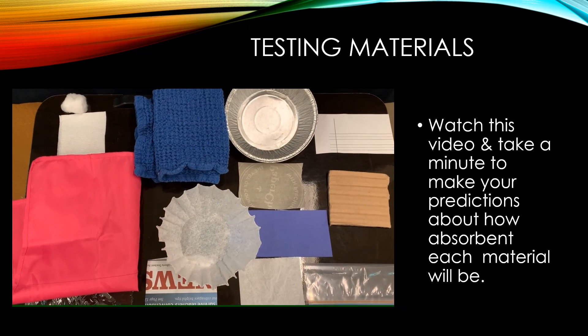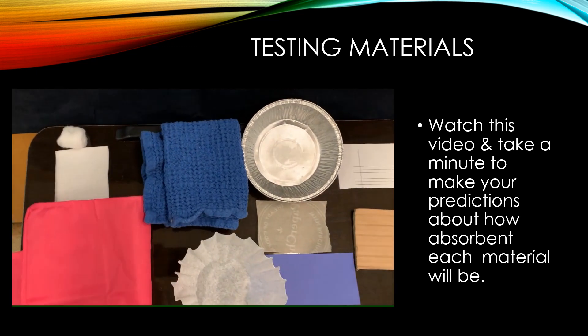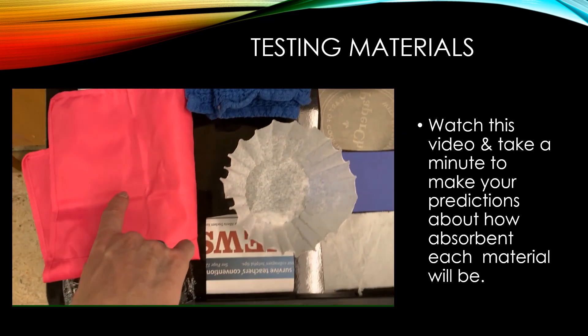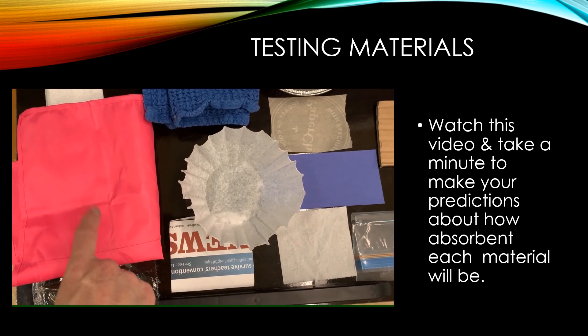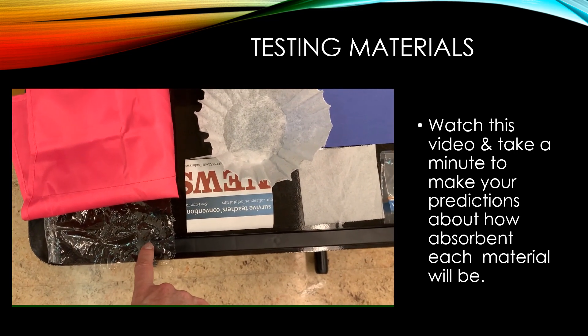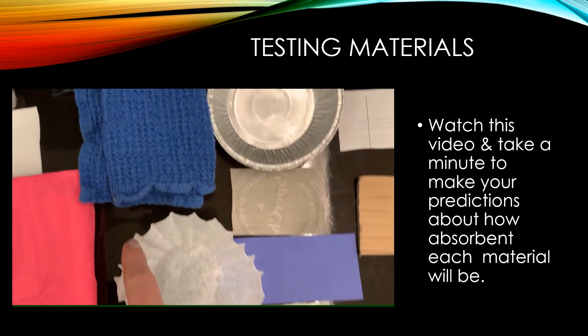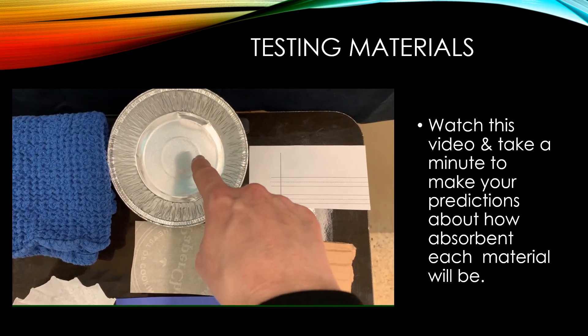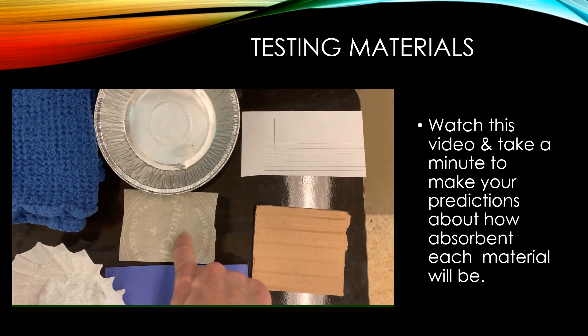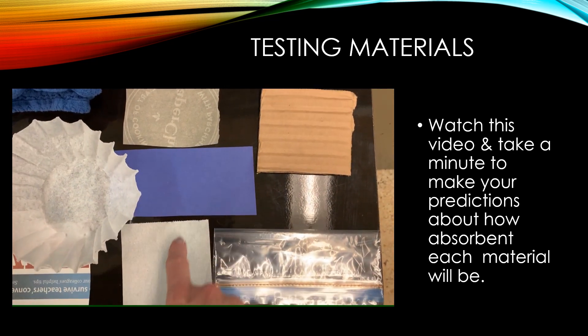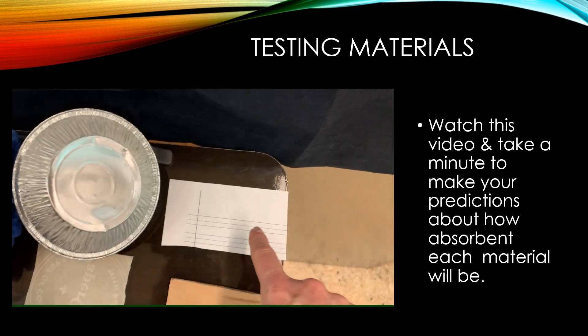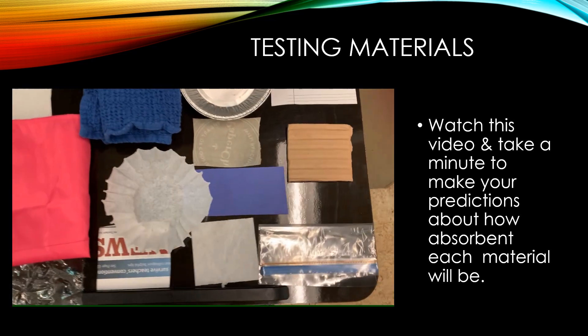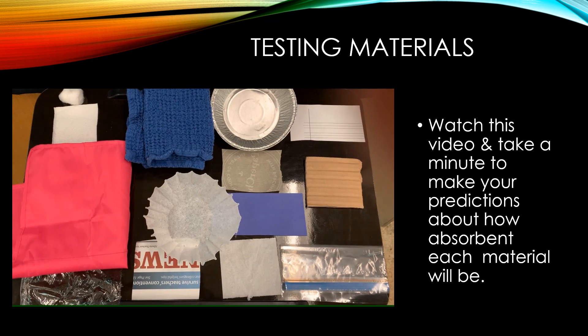These are some of the materials we're going to test for absorbency today. We're going to start our experiments with the cotton ball, then move to paper towel, nylon fabric (like the same fabric that your backpacks are made out of), cellophane or plastic wrap, a cotton towel, a coffee filter, a newspaper clipping, some aluminum foil, wax paper, construction paper, toilet paper, some writing paper, cardboard, and plastic. Again, absorbency is how well these materials will soak up a liquid.